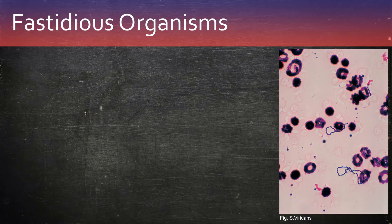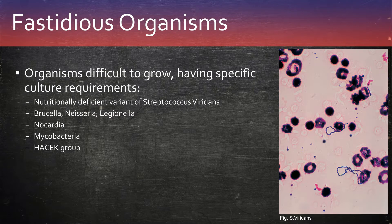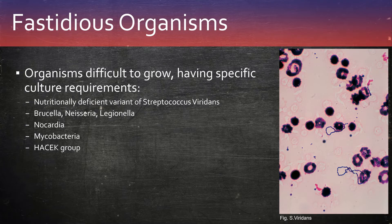Organisms that can cause culture negative endocarditis include fastidious organisms — those which are difficult to grow in culture in the lab. These include variants of Streptococcus viridans, Brucella, Neisseria, Legionella, Nocardia, Mycobacteria, and the HACEK group of oropharyngeal bacteria.